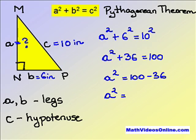A squared equals 64. Therefore, since A can only be a positive number, A equals 8 inches.